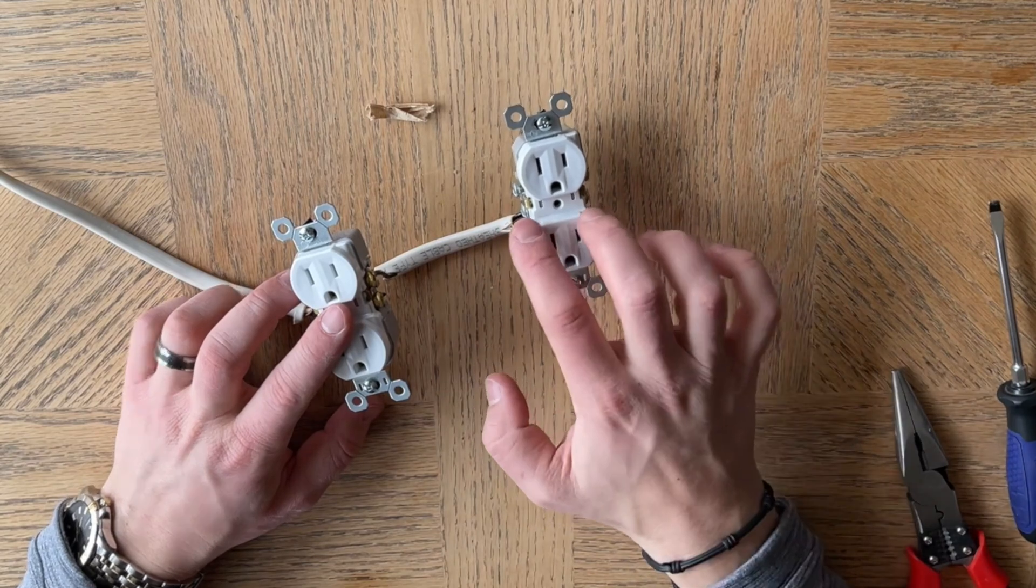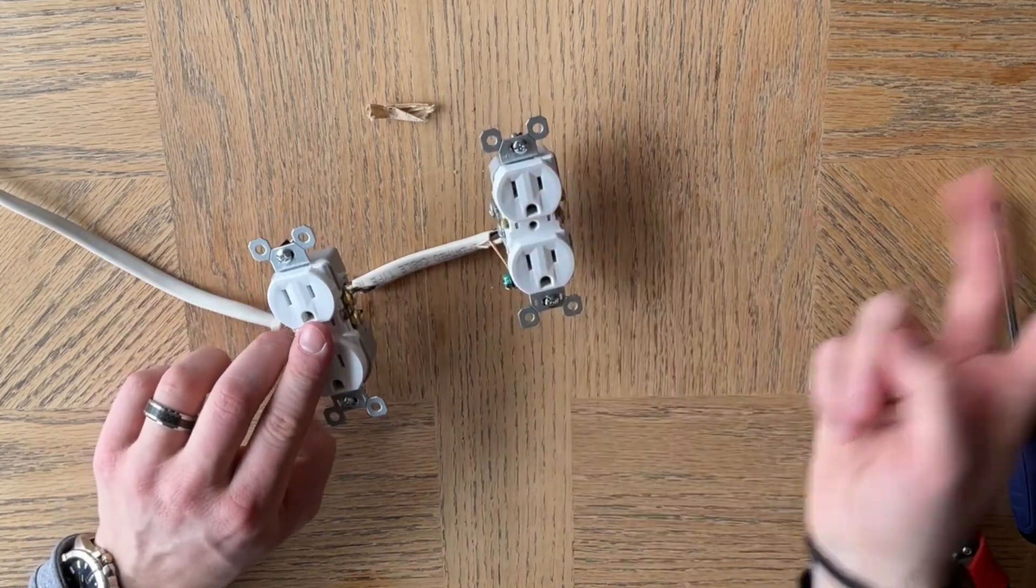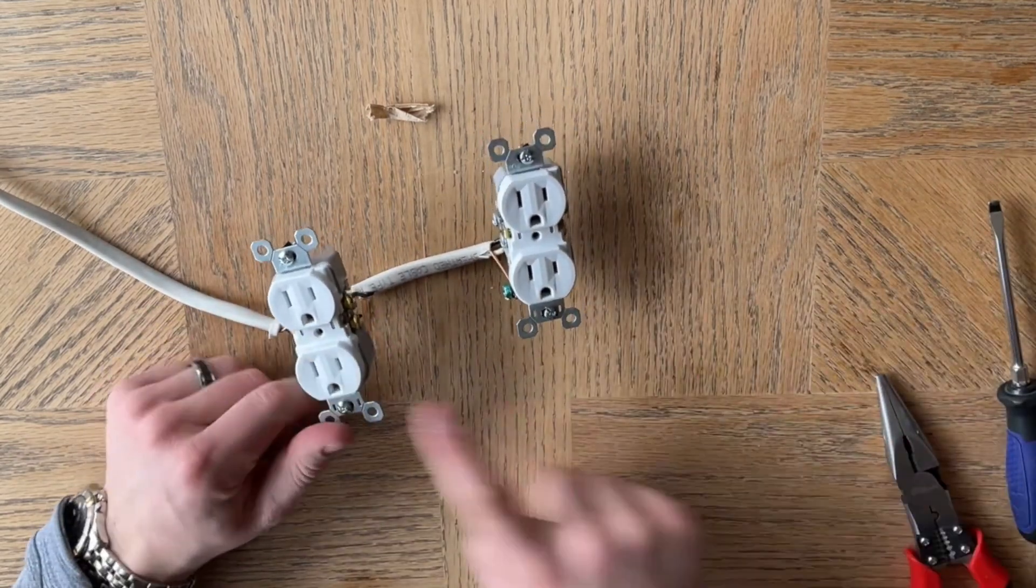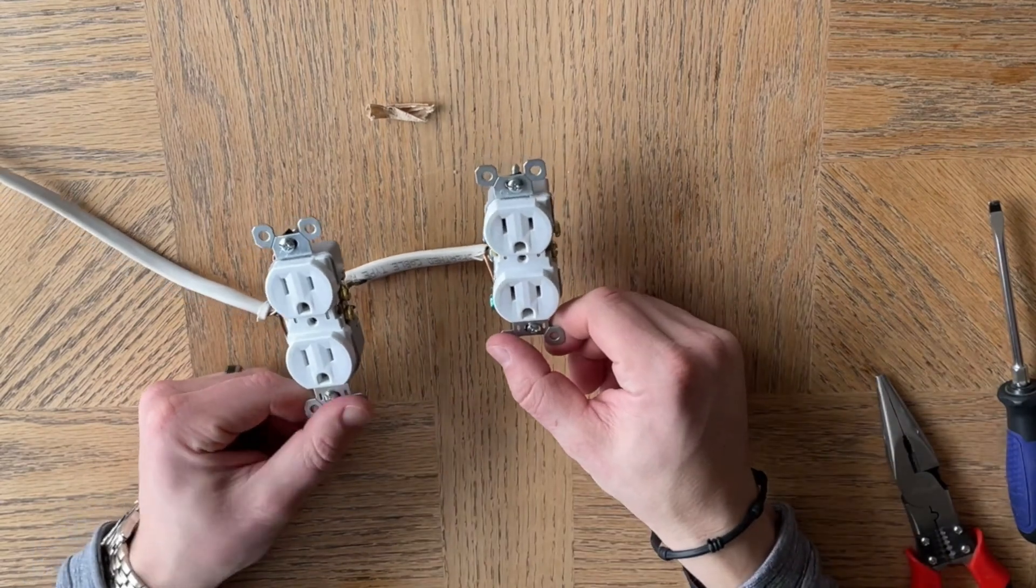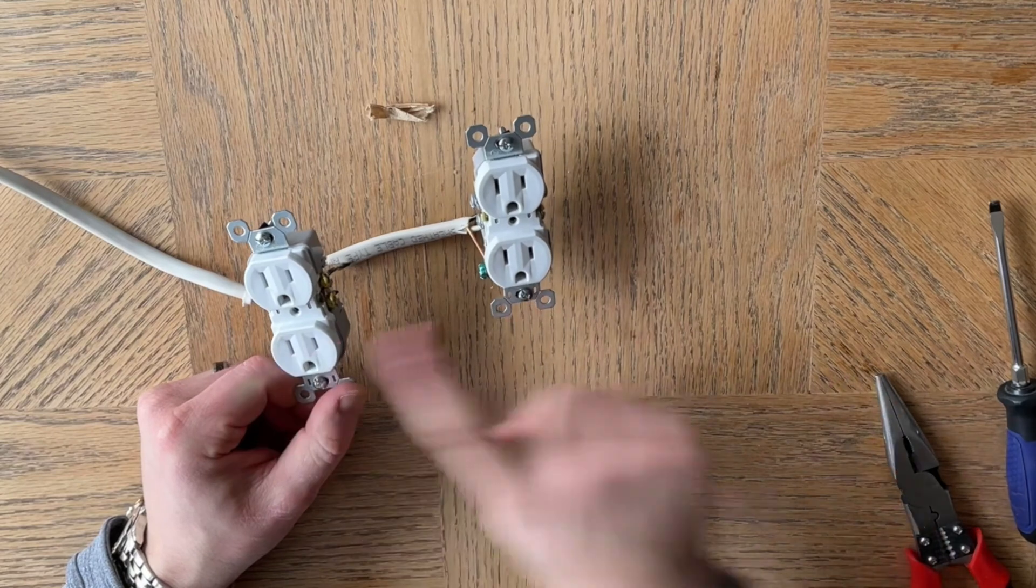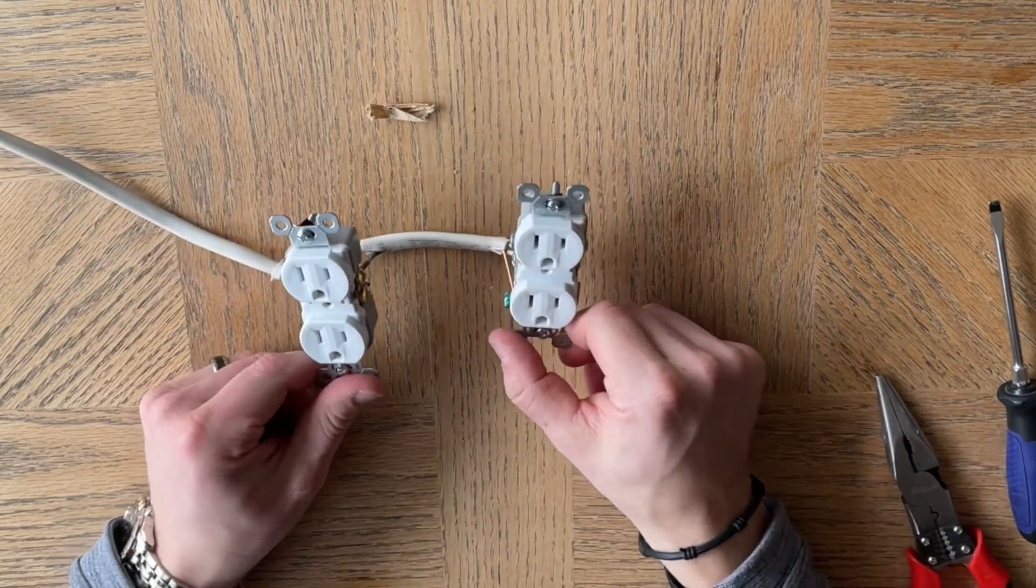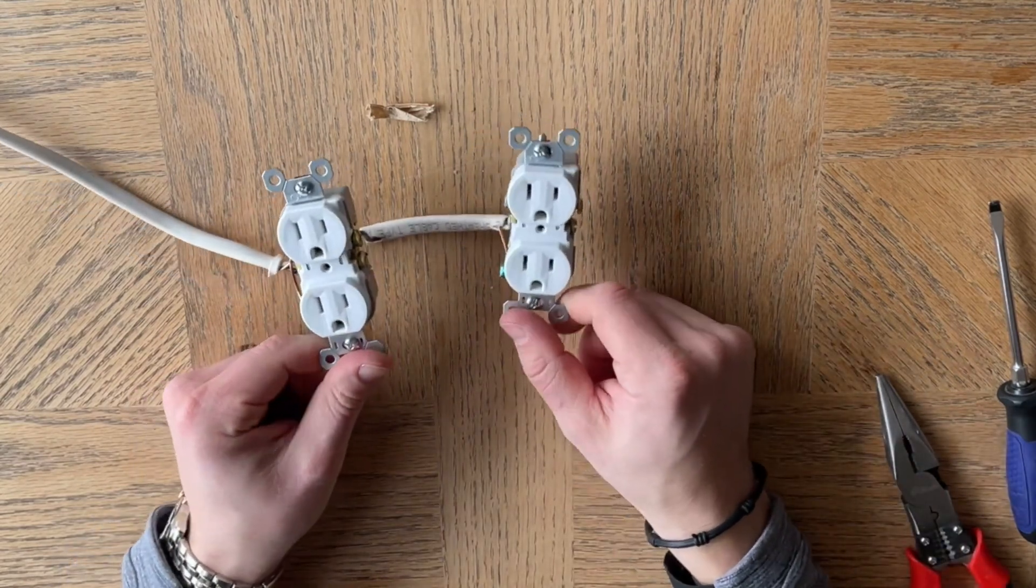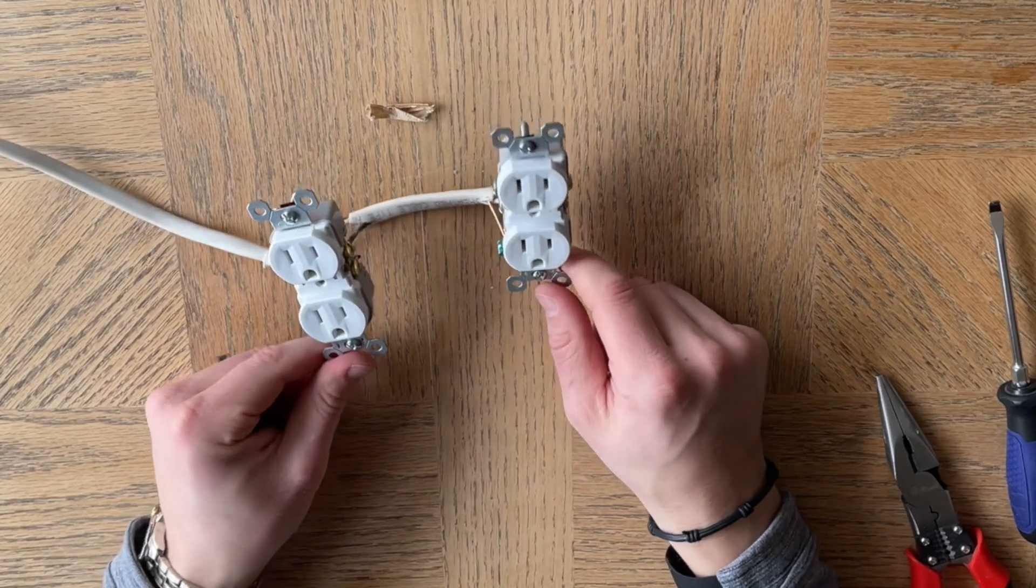Now you could continue this on from the top and this would be a daisy chained outlet series that is one supply line powering multiple outlets. And so that is how you would run a daisy chain or series of outlet receptacles.